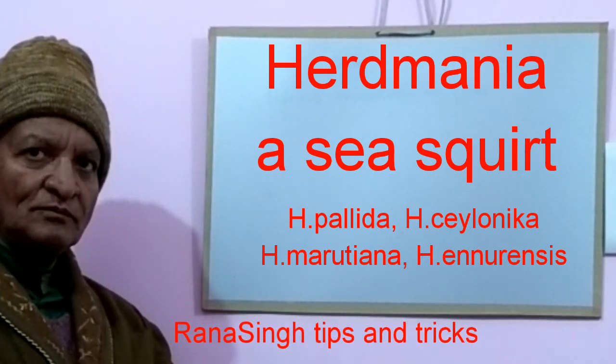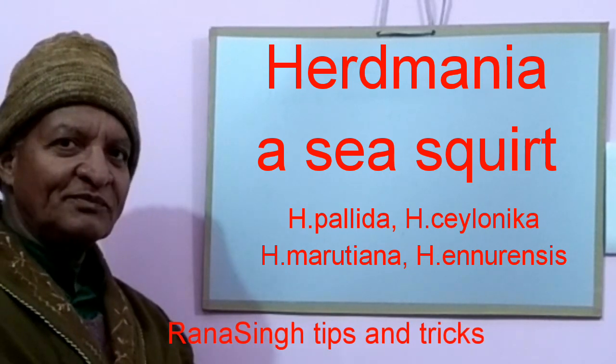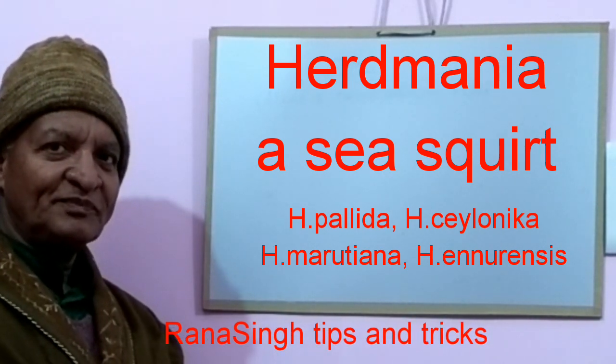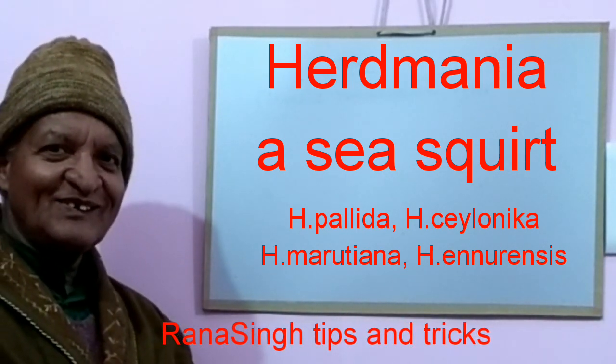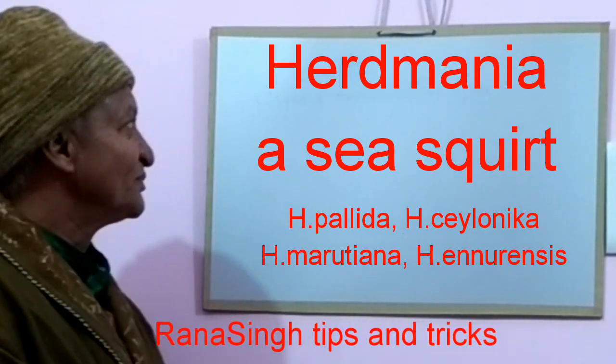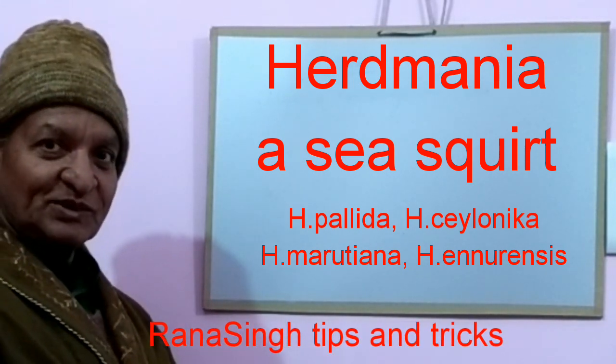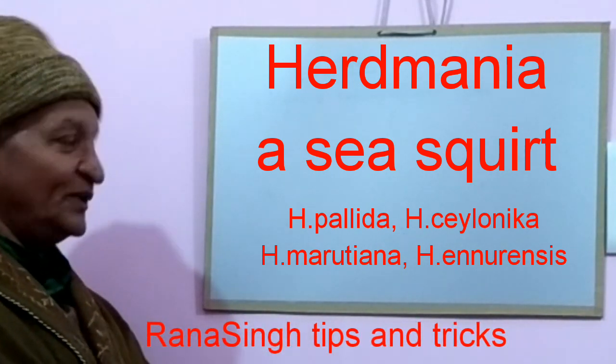Herdmania is a sea squirt distribution. It is cosmopolitan, represented by 12 known species. Of these, only four species are found in the Indian Ocean. They are Herdmania pallida, Herdmania marutiana, and Herdmania ceylonica.